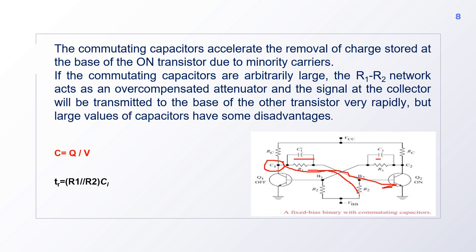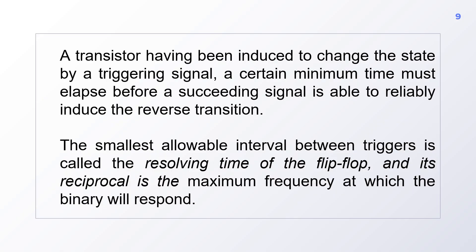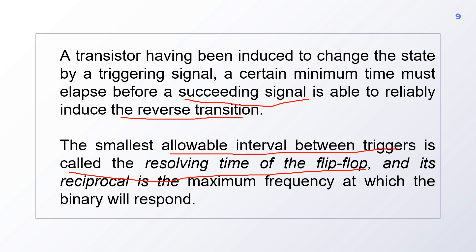But large values of capacitors have some disadvantages. A transistor having been induced to change state by a triggering signal — the bistable multivibrator has two stable states, and if you want to bring it back to its original state, it requires one more external triggering signal, called the succeeding triggering signal, to induce the reverse transition. The smallest allowable interval between two triggers is called the resolving time of the bistable multivibrator.